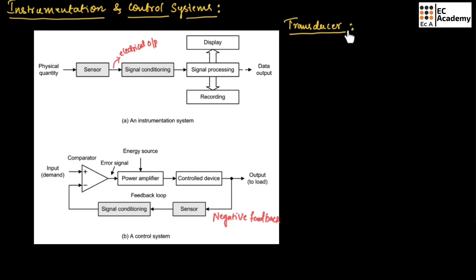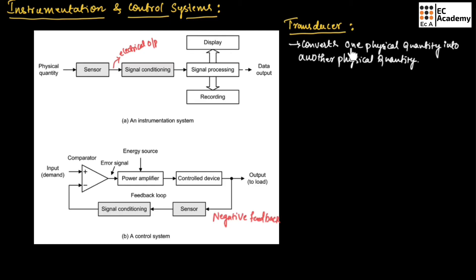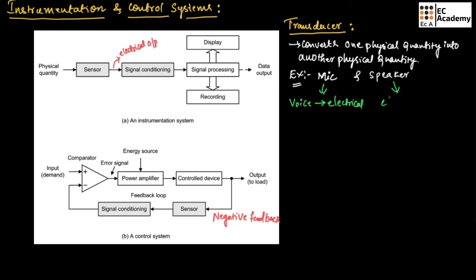Now let us understand what a transducer is. A transducer is a device that converts one physical quantity into another physical quantity. For example, if we take a microphone and a speaker — the mic will convert voice into an electrical signal, and the speaker will convert an electrical signal into voice. So one form of physical quantity is converted into another form in both microphone and speaker, which is the example of a transducer.